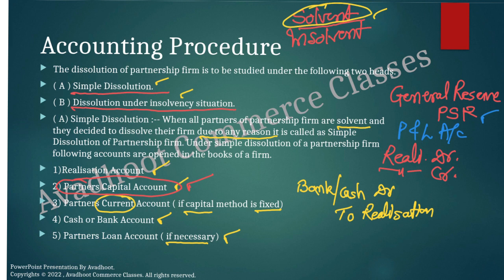After collecting money, first make the payment of realization expenses. The realization account is just like a profit and loss account — therefore debit the realization account for all expenses. The entry is: realization account debit to cash or bank account. On the realization account debit side, write the expenses in brackets with the amount; on the bank account credit side, write 'by realization — realization expenses' with the figure. These are also called dissolution expenses.